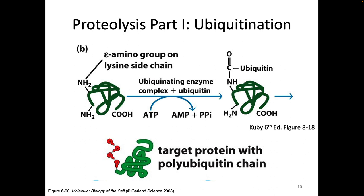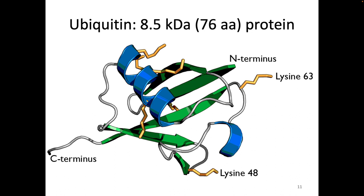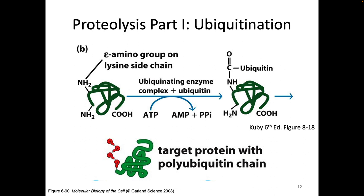We have this small protein called ubiquitin. Ubiquitin is shown here as a red shape. It is a small protein — 8.5 kilodalton, 76 amino acid protein — and it can be added to stuff. There are enzymes that will actually put ubiquitin onto things. Here we have a protein with no ubiquitin, and now we've added ubiquitin because of this ubiquitinating enzyme. Sometimes we get a bunch of ubiquitins added on as a chain.